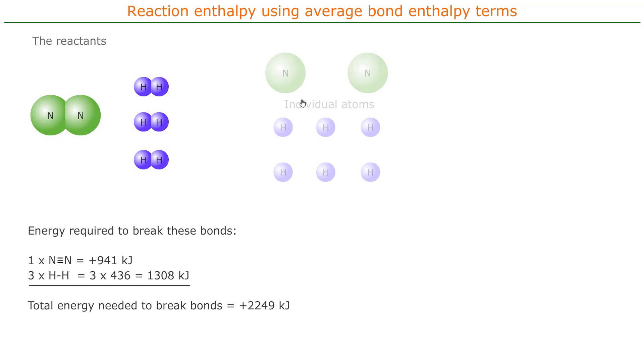So what do we get when we break the bonds? We get the individual atoms. So now the individual atoms are like the halfway stage of the process. So we've put in 2249 kilojoules and we've got the individual atoms.